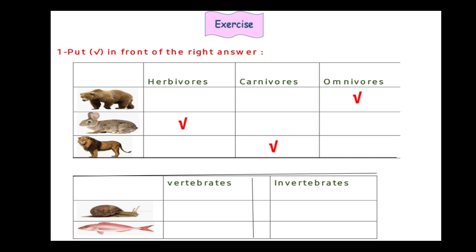The next table — vertebrates and invertebrates. Number 1, what is it, Junior 2? It's a snail. Snail doesn't have a backbone, so snail is from invertebrates. Number 2 — fish. Is fish from vertebrates or invertebrates? Fish has a backbone. So fish is from vertebrates. Put a tick on vertebrates.